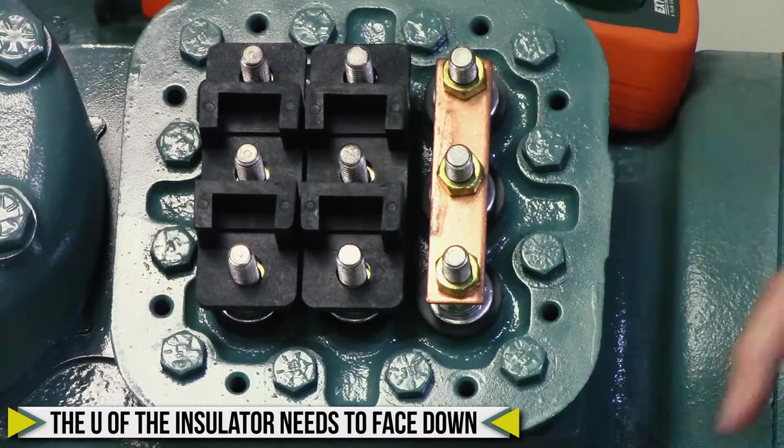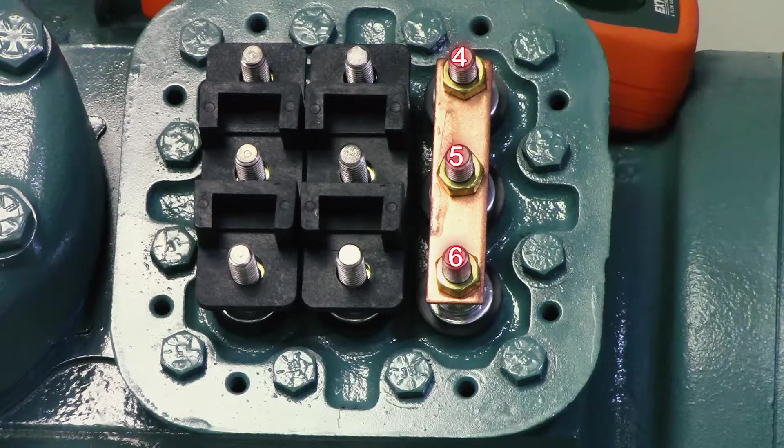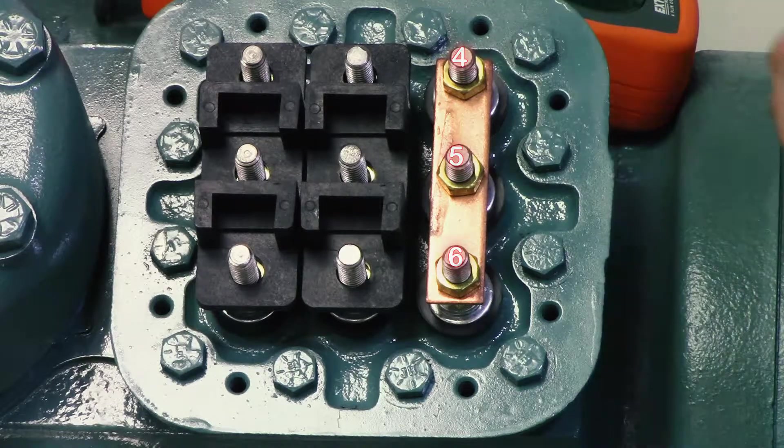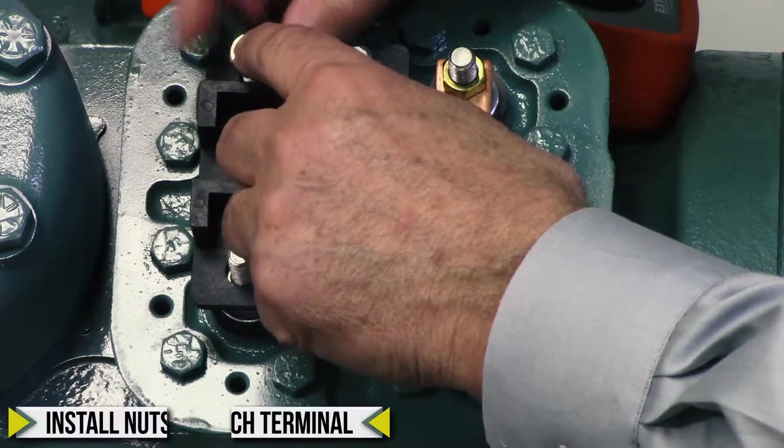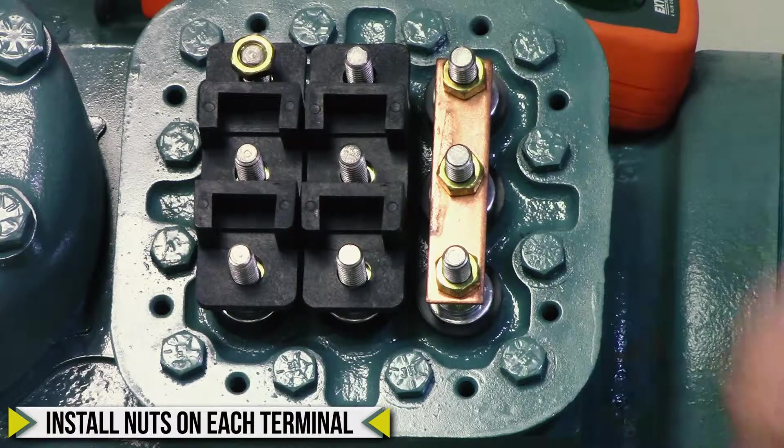On the 9-lead plate, what you do is you jump out four, five, and six. You install nuts on each one of these terminals.